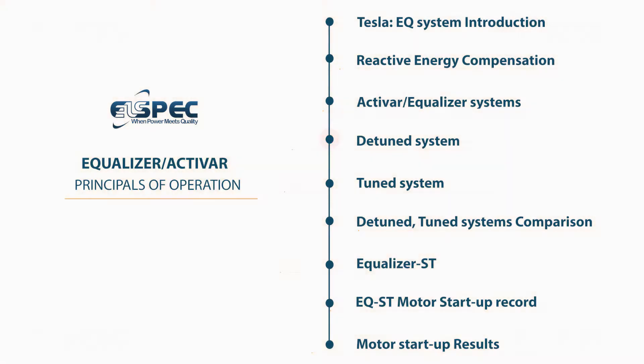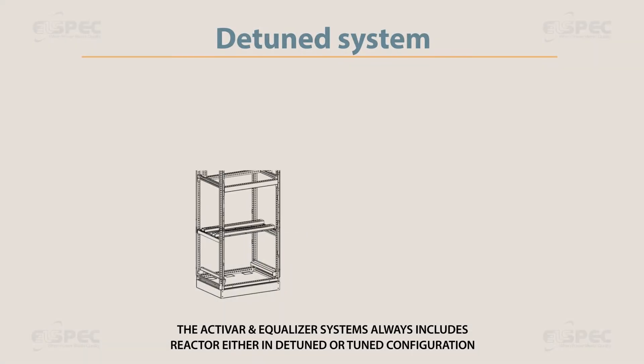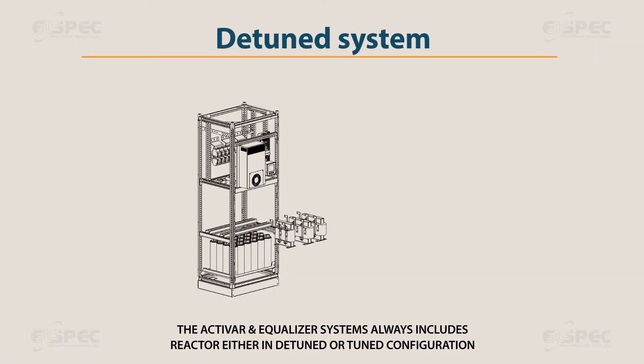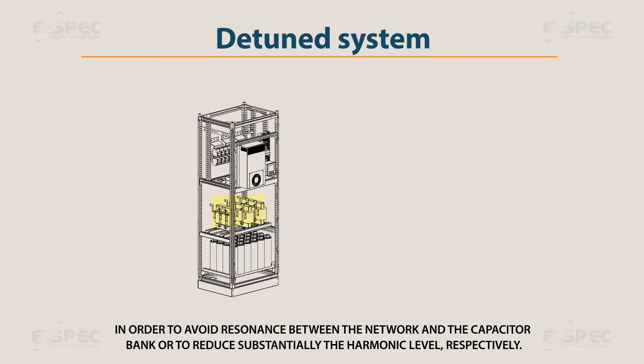The ACTIVAR and equalizer systems always include a reactor, either in detuned or tuned configuration, in order to avoid resonance between the network and capacitor bank, or to substantially reduce the harmonic level respectively.